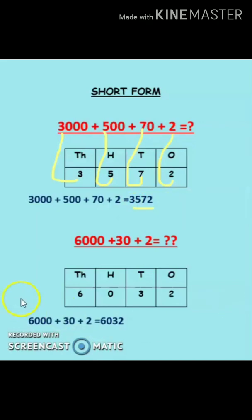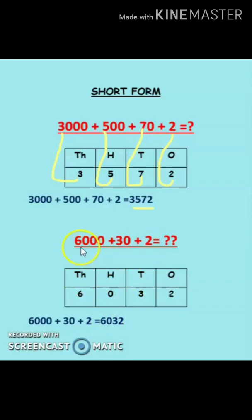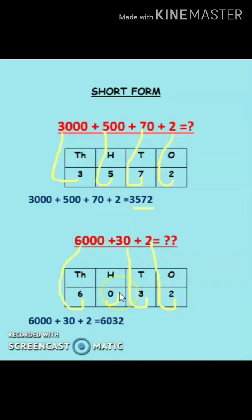Let's take the example six thousand thirty-two. We can see there is no hundreds place. One way is to simply read: six thousand thirty-two. The other way is by assigning places: six thousand under thousands place, thirty under tens place, two under ones place. Since hundreds place is missing, put zero there. The number becomes six thousand and thirty-two. Be very careful about putting zero.